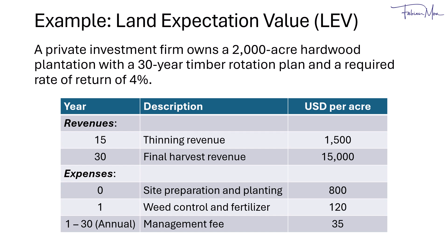The thinning revenue is $1,500 per acre. Then at year 30, the final harvest revenue would be $15,000 per acre, where they sell large, high-quality logs for premium uses like furniture and flooring. In the expenses, site preparation and planting at year zero — including clearing, soil preparation, and seedlings — is $800 per acre. In year one, weed control and fertilizer to ensure healthy early growth is $120 per acre. The annual management fee from year one to year 30 is $35 per acre, covering monitoring, pest control, pruning, and general upkeep. We want to calculate the LEV for this plantation on a per-acre basis.